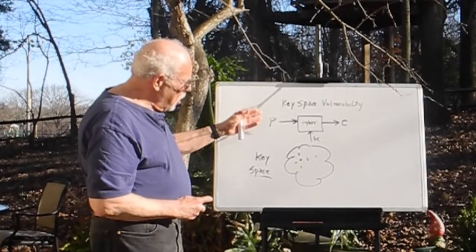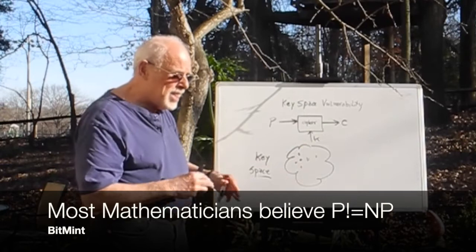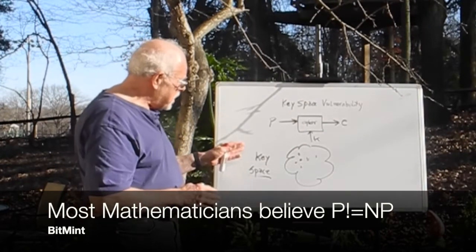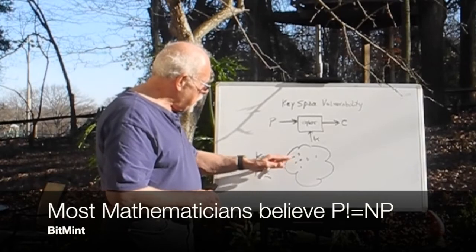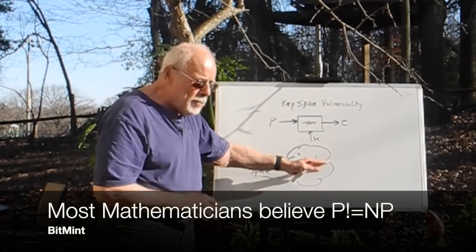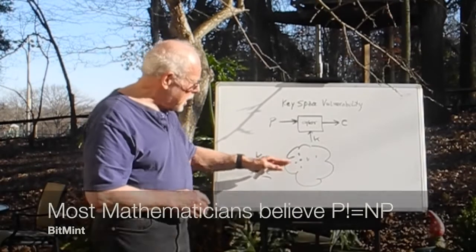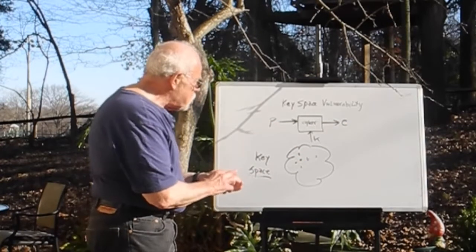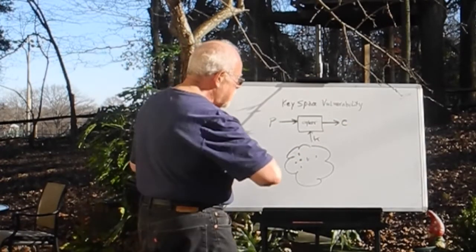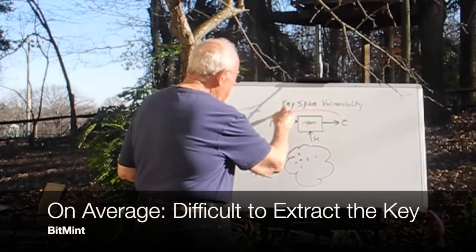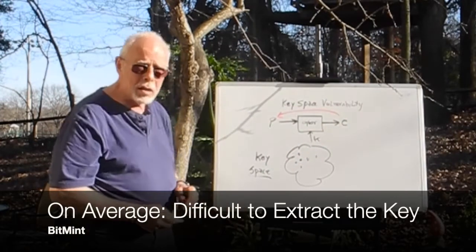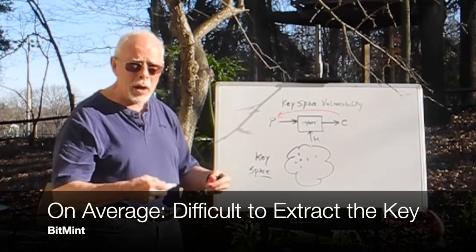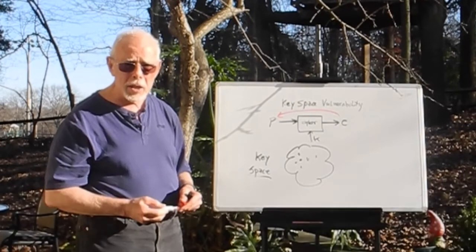Now, with mathematics, we cannot prove — not prove, but indicate — that in the average case, if we select an average key, it will be very difficult to reverse the ciphertext back to the plain text. There is mathematical work that will indicate this.